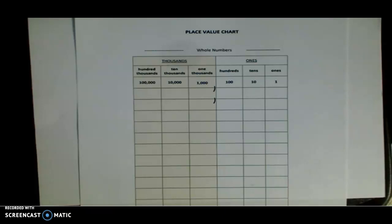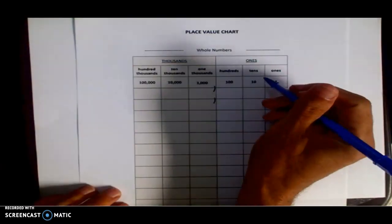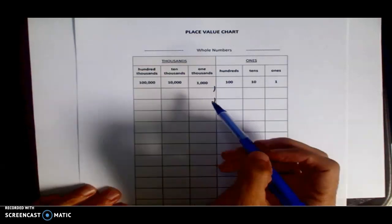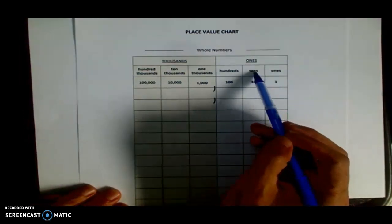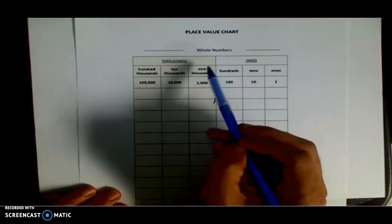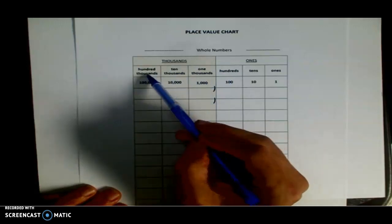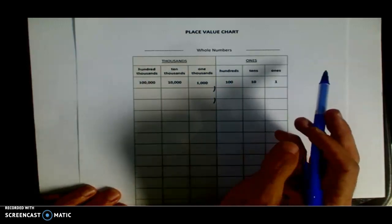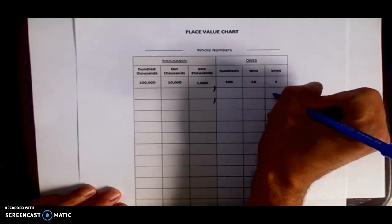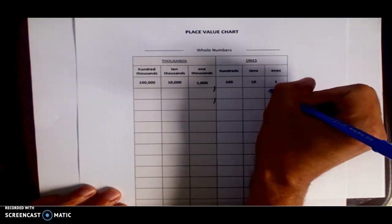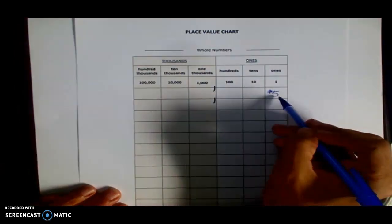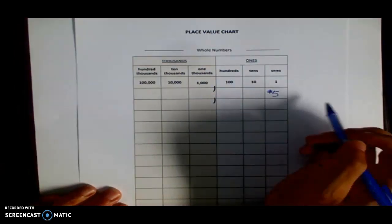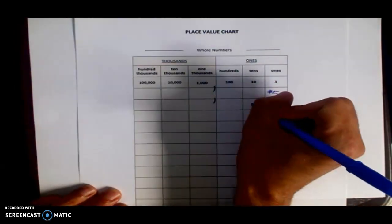It has a lot to do with its value. For example, if you look here at the basic place value chart, we have our ones, tens, hundreds, thousands, ten thousands, hundred thousands. If I were to put a five here, let's say that meant five dollars. That's just five dollars.